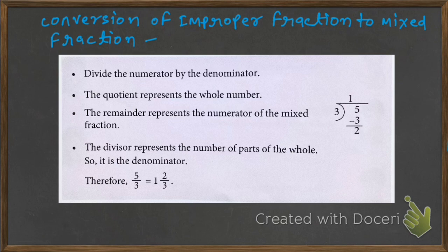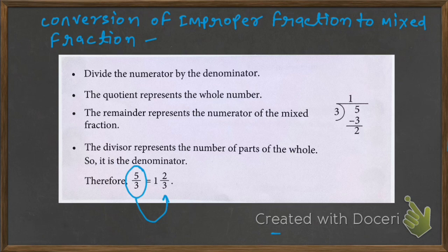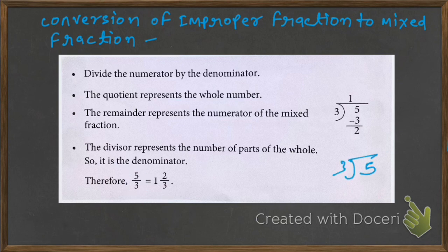We have been given one improper fraction. For example, suppose we have to convert 5 upon 3. 5 upon 3 is an improper fraction because the numerator, the top number, is greater than the bottom number. The numerator is greater than the denominator, so it is called an improper fraction. We have to convert this into mixed fraction. So first, divide 5 by 3.